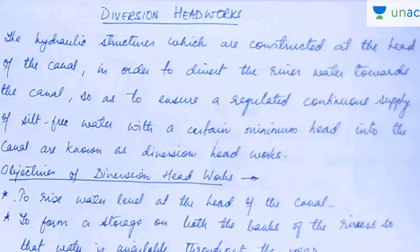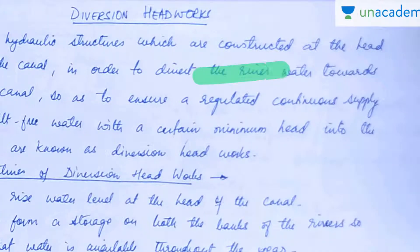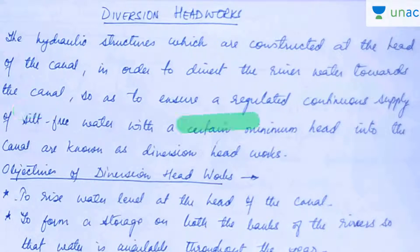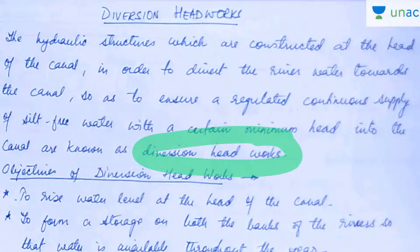We will study about diversion head works here. The hydraulic structures which are constructed at the head of the canal in order to divert the river water towards the canal, so as to ensure a regulated continuous supply of silt-free water with a certain minimum head into the canal, are known as diversion head works.